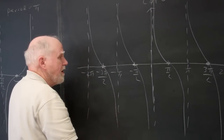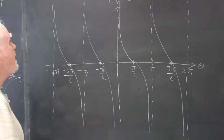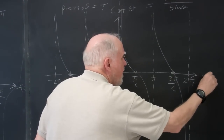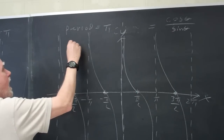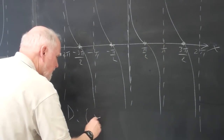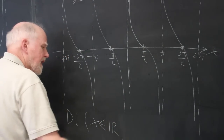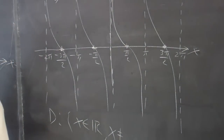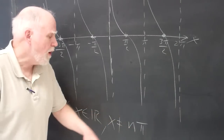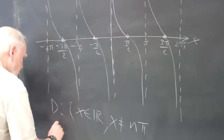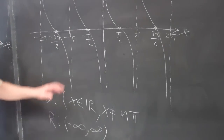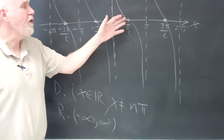I advise you to put this in your calculator and take a look — you'll see these branches appear. Period equals pi units. We can call this y equals cotangent of x. The domain is all real numbers except x cannot equal n pi, where n is an integer — so it can't equal 2 pi, 5 pi, negative 20 pi, and so on. The range goes from negative infinity to positive infinity, just like the tangent. All we have to do is take the tangent, flip it upside down, and move it over pi over two, and we have the cotangent.